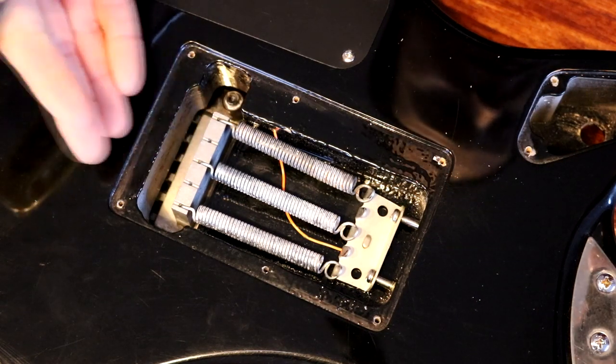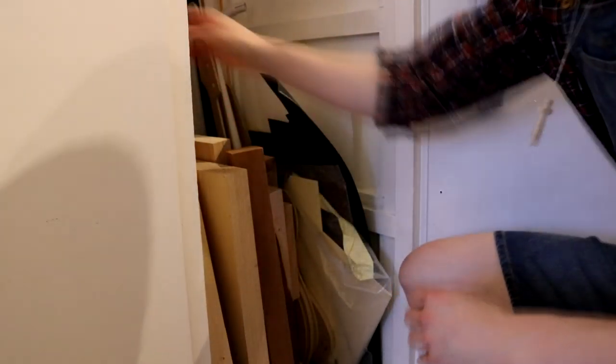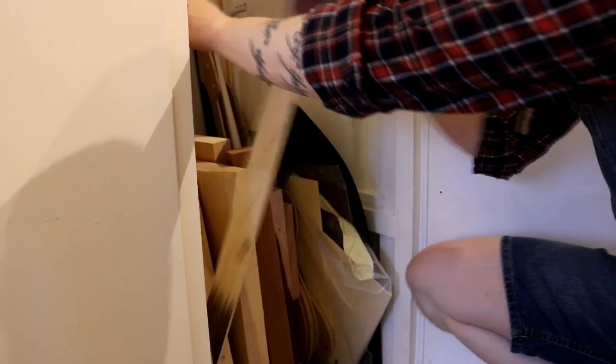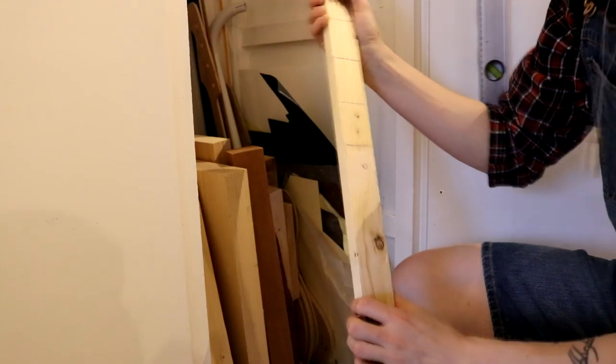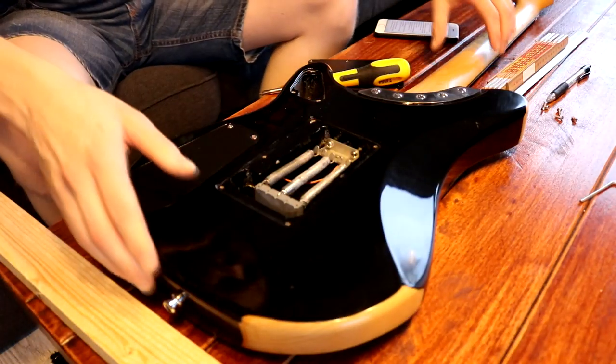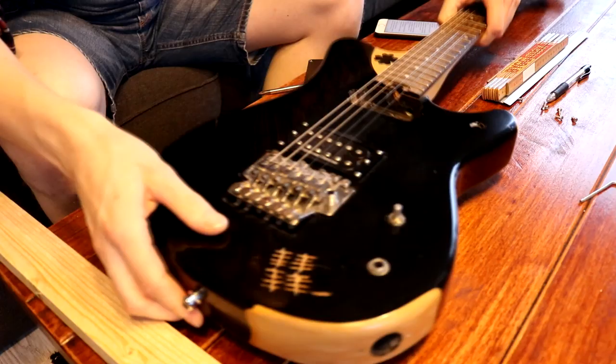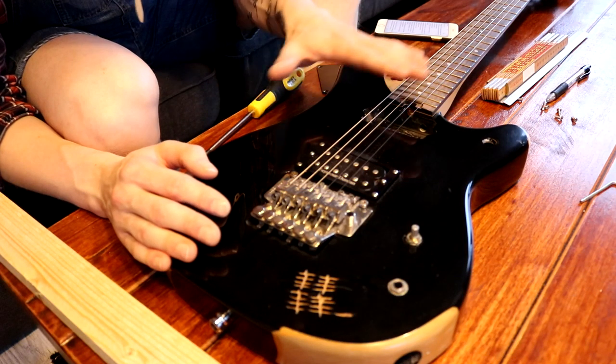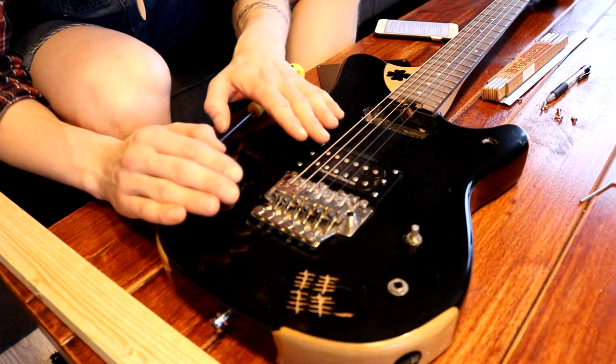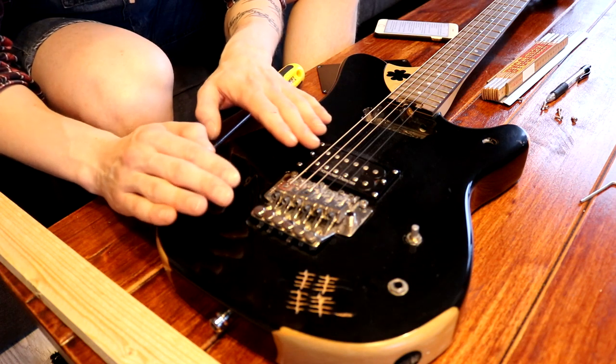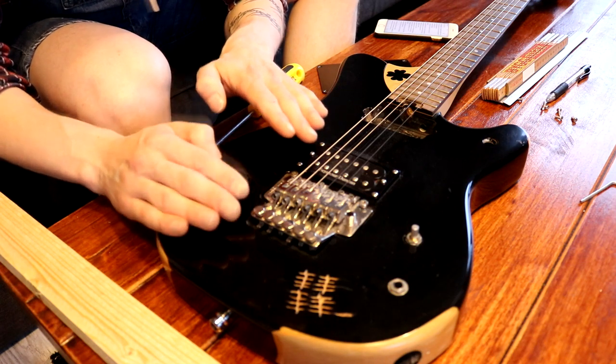I'm going to use a scrap piece. I'm going to keep the strings on for now because they're actually holding up the bridge in its flat position, and that's the position that I want to keep it in.